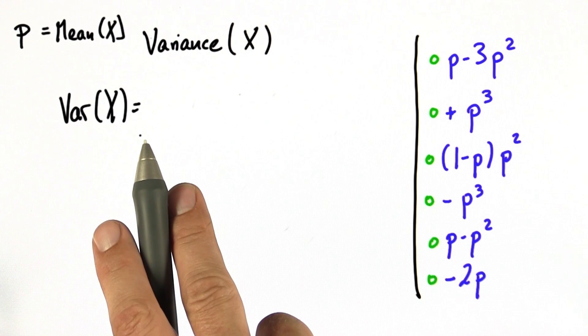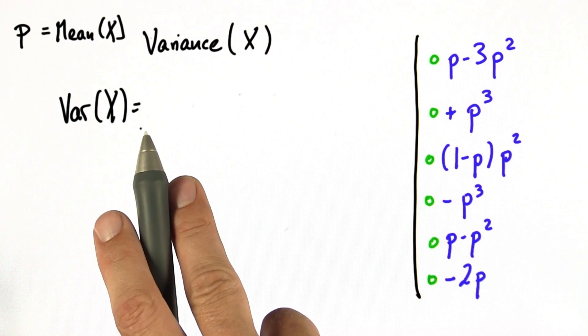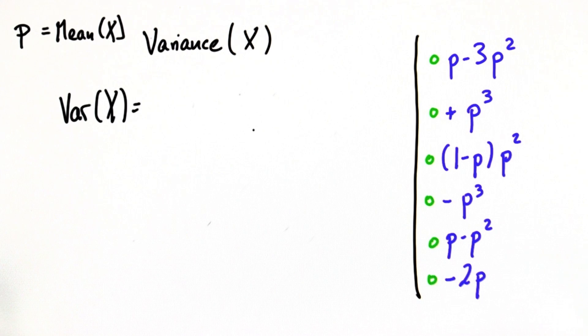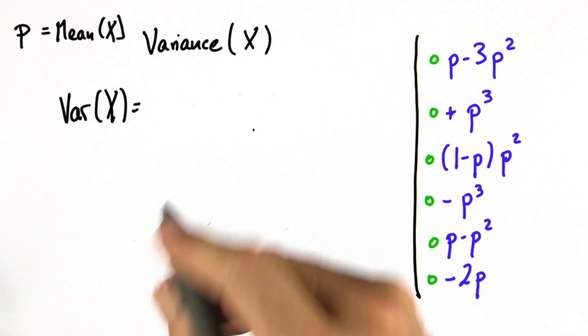So to calculate the variance of x, we first notice that p is the mean of x. And if you look at the two possible outcomes, starting with heads and then tails,